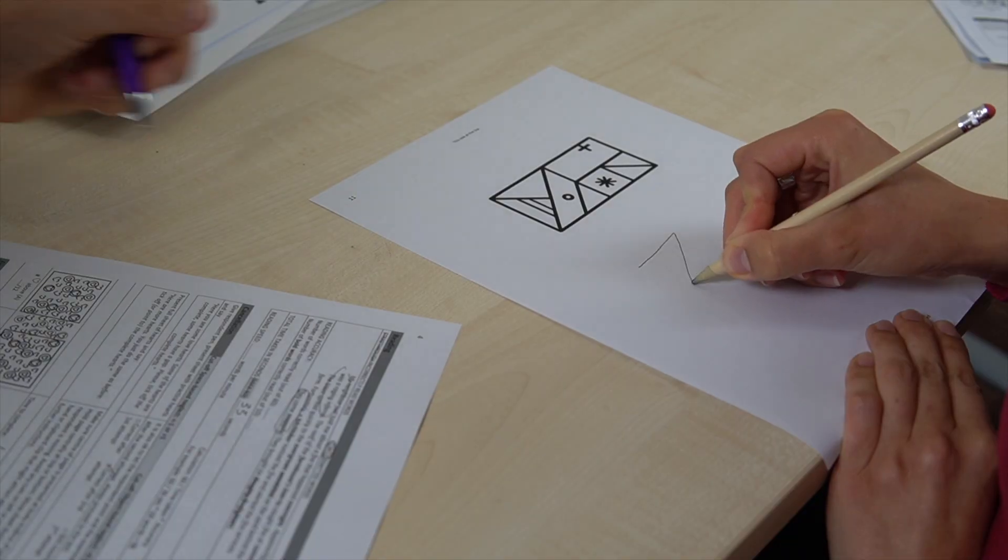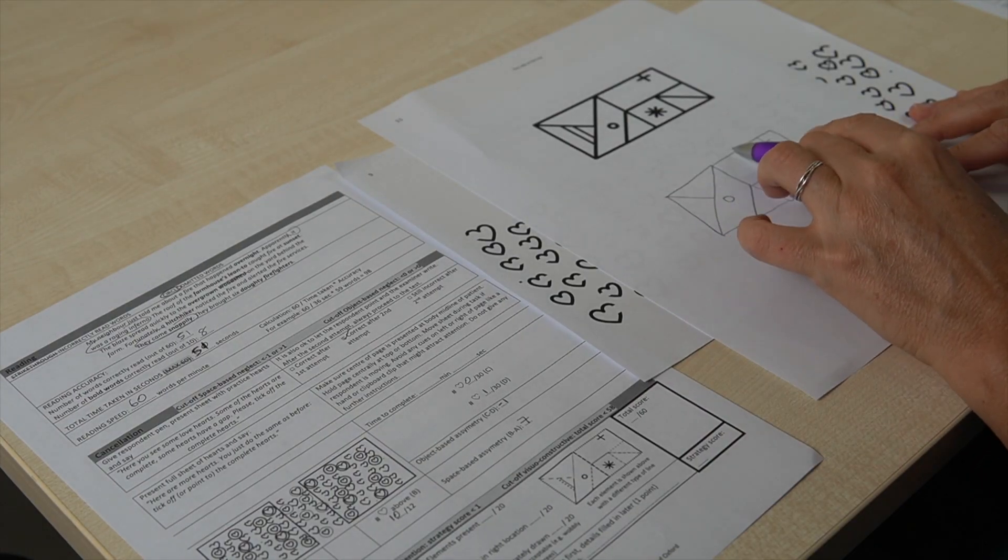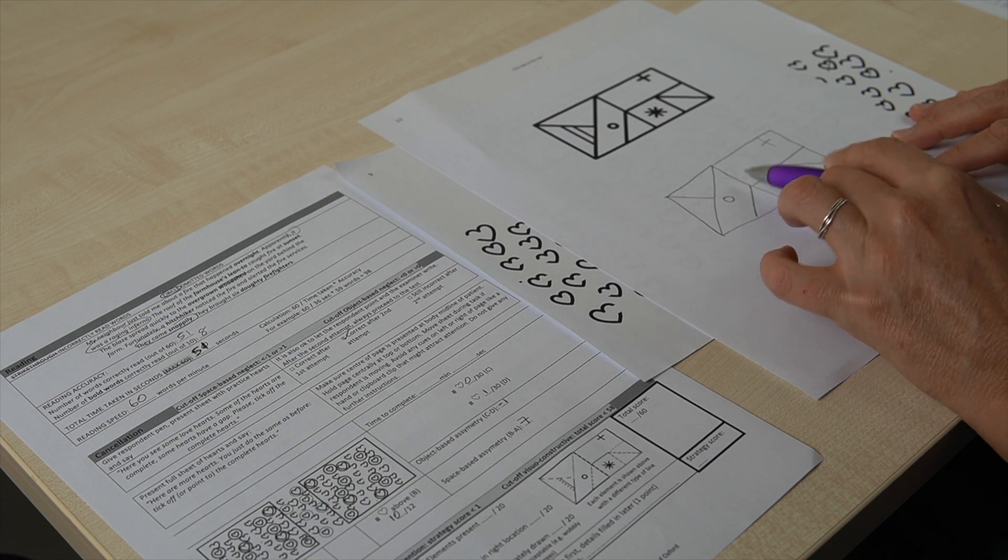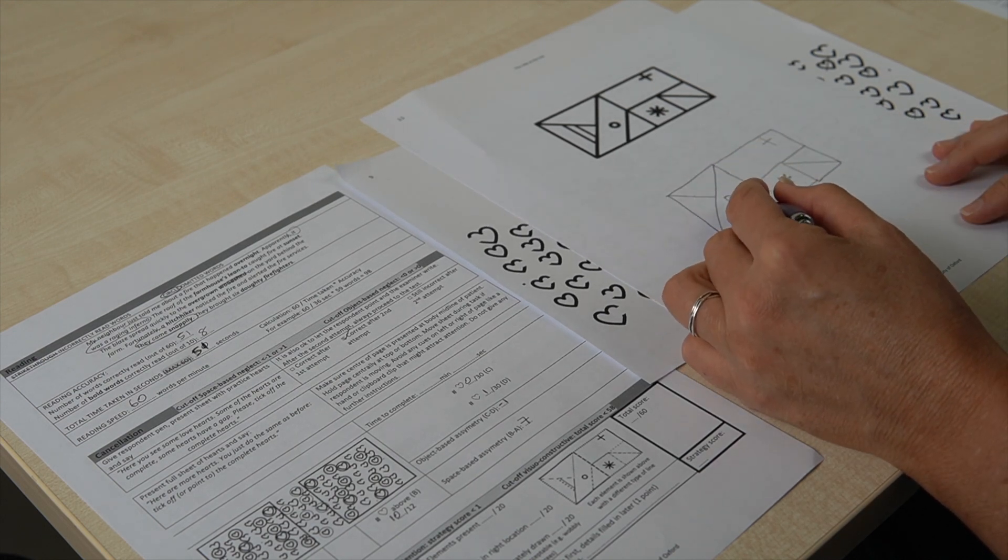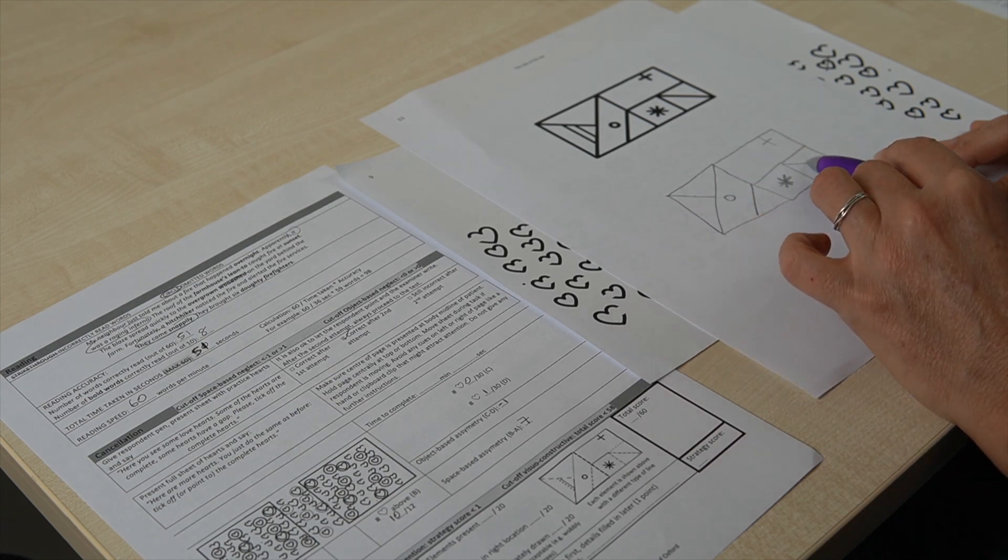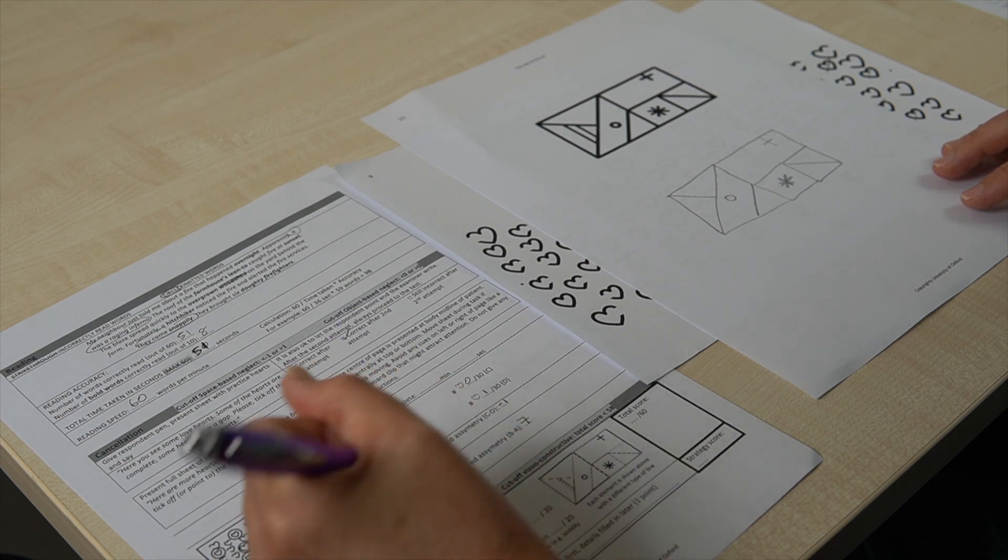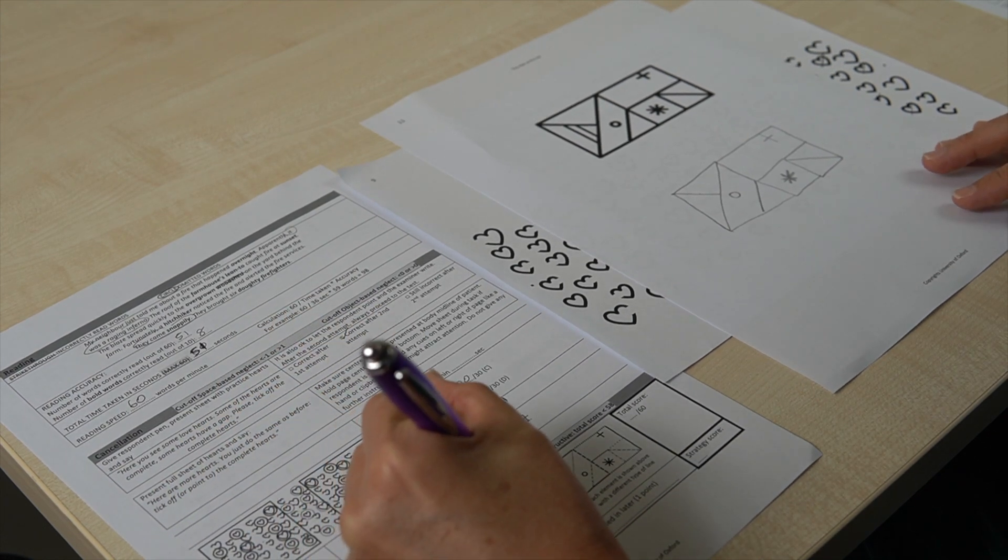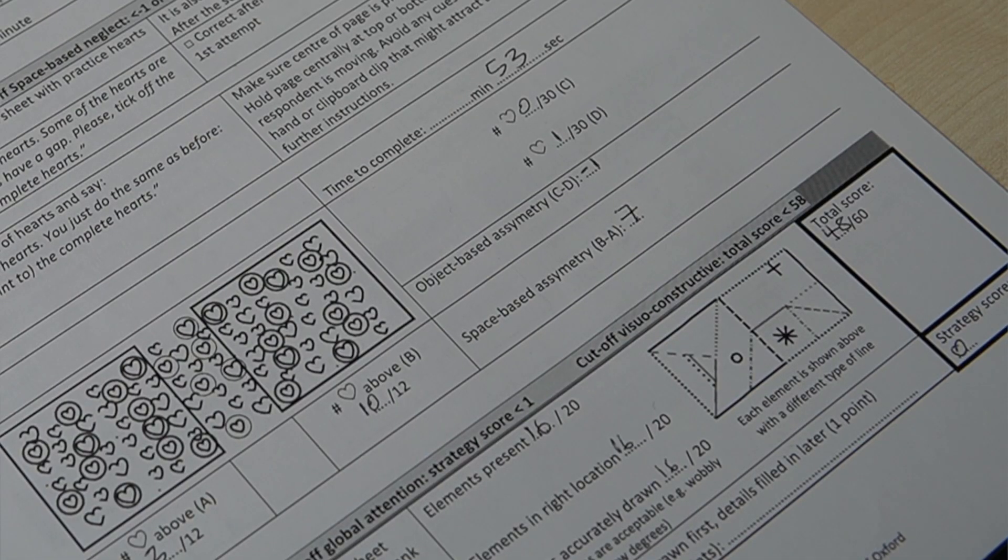In the figure copy, again, you want to just notice what their strategy was. So first you can tick off what their strategy was. In this case, they did not start with the rectangle first. Then when you look at the elements present, there are 20 that you can see on the sheet. If you start by just counting all the sides of the rectangle and the line inside, you get seven automatically. And then you count each individual element. In this case, the patient got 16, and they were in the right location, those 16, and they were also drawn accurately. So they also get 16. Then you're just going to multiply that by three, all those scores, to get the total score. And if they had drawn the large rectangle first, they get a strategy score point. But in this case, it was zero.